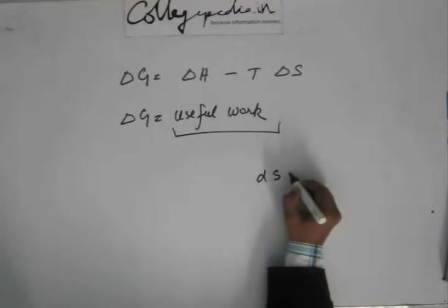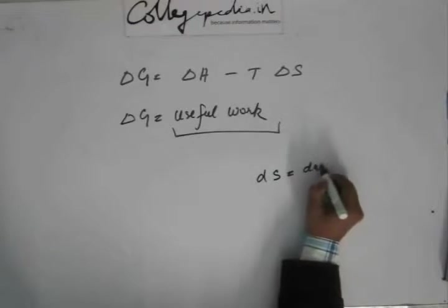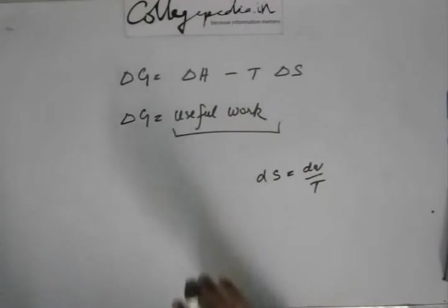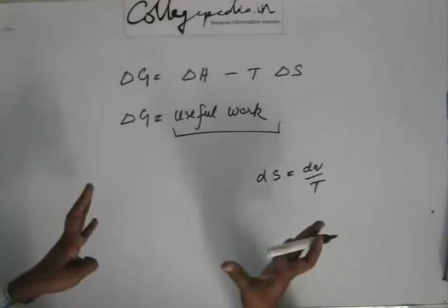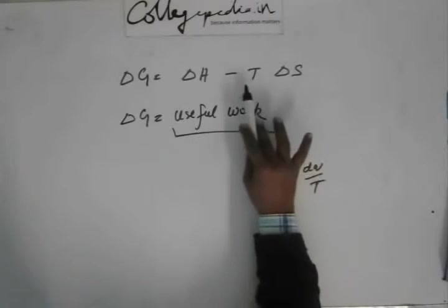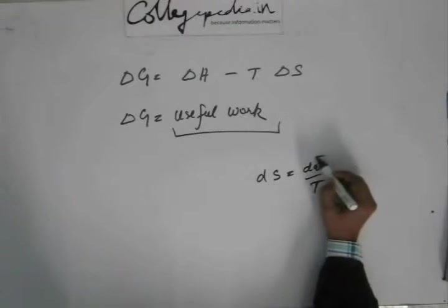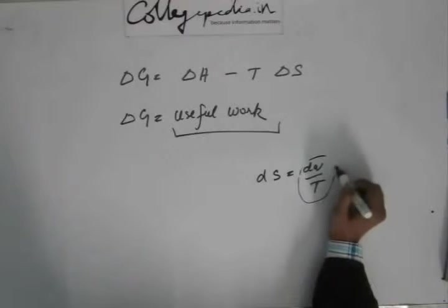From the basic definition, once again dS is equal to dQ by T. Now this is the amount of heat that the surrounding has given to the system. Now T into dS, as has been given here, T into delta S is delta Q, and this dQ is the heat which has been lost by the system.